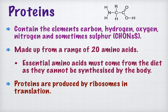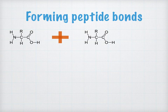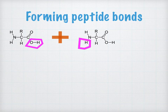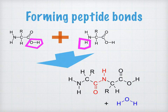Proteins are produced by ribosomes in the process of translation, which will be covered in a later lesson. To make a protein you link together amino acids by forming peptide bonds. The important groups involved are the NH2 amino group and the COOH carboxyl group. The OH from the carboxyl group and the H from the amino group are lost as a water molecule — another condensation reaction — forming a linkage directly between the carbon and nitrogen atoms to produce a dipeptide.